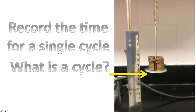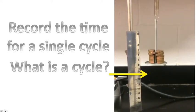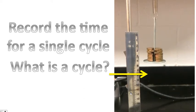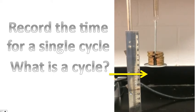3 cycles. 4 cycles. That's 4 repetitions of motion. 5 cycles. 6 cycles. Hopefully you get the idea of counting a cycle.